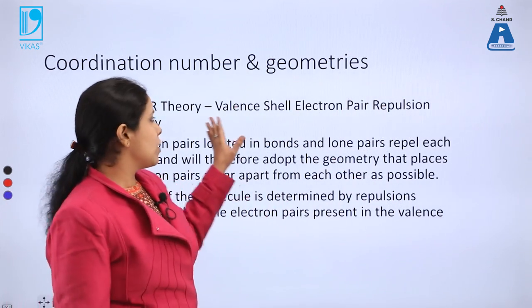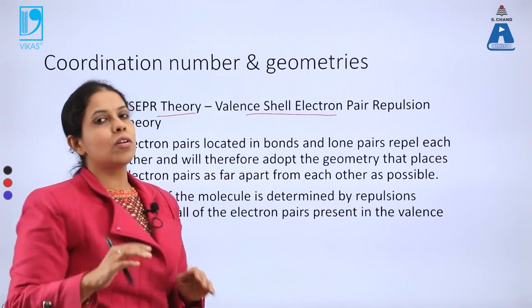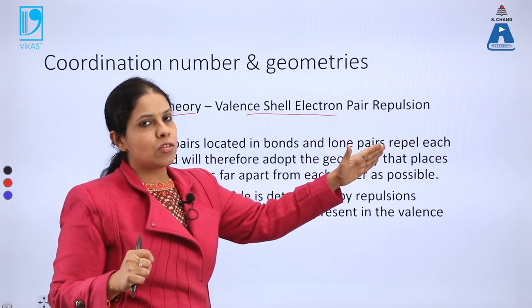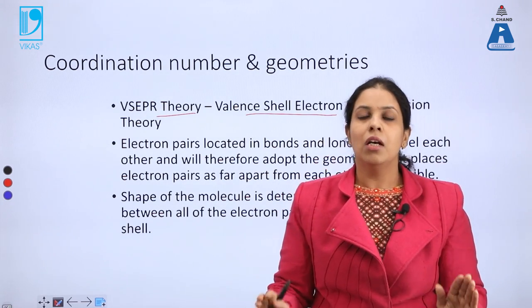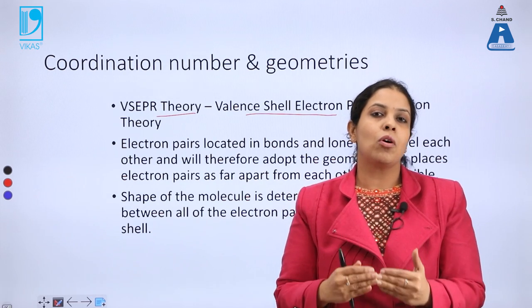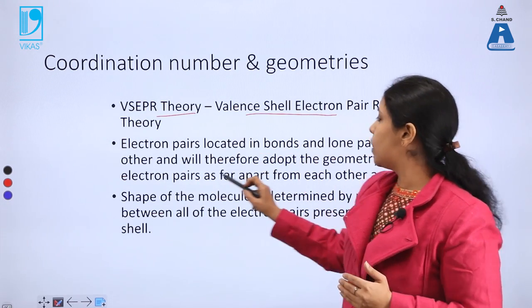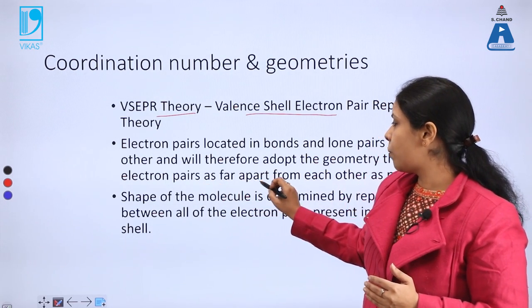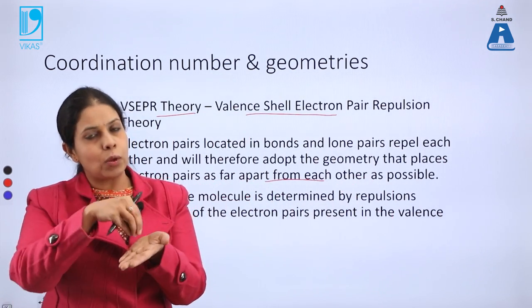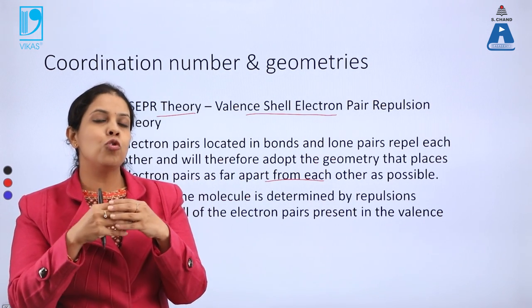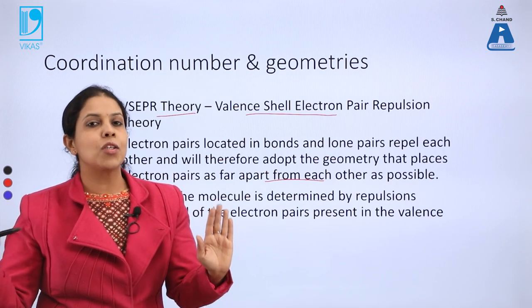The basic theory we use for this is VSEPR theory — Valence Shell Electron Pair Repulsion theory. As the name defines, electrons repel each other. VSEPR theory states that if electrons are repelling each other, the structure will be such that repulsion is minimized and energy is stabilized. Electron pairs located in bonds and lone pairs repel each other and therefore adopt the geometry that places electron pairs as far apart from each other as possible.